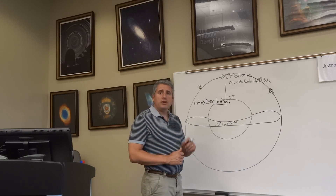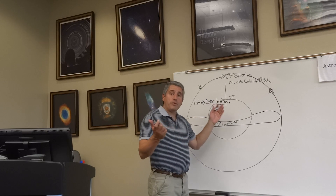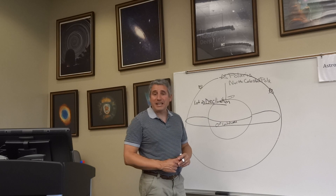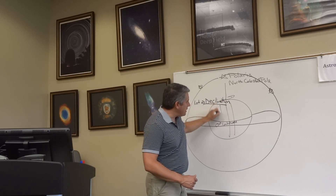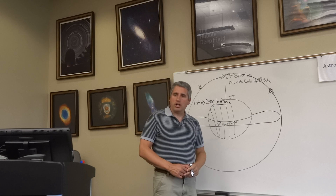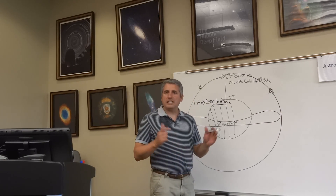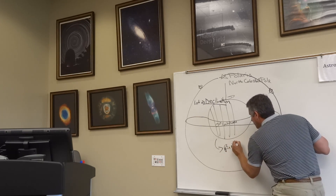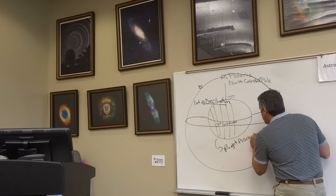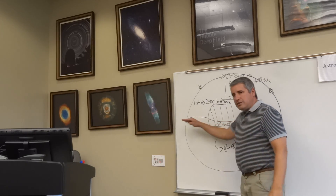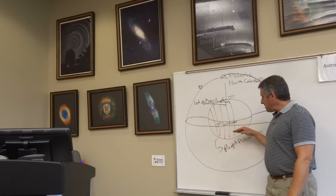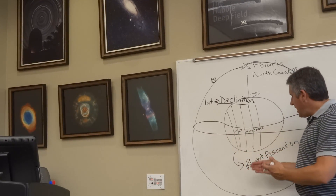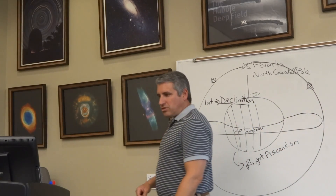Just like we would on Earth, we need a north-south line to pin down a location — what we call 'x marks the spot.' On Earth, we call those lines of longitude. In space, those lines of longitude represent something called right ascension. So in order to locate something on the surface of the Earth, you would quote its latitude and longitude. In space, you would work from declination — celestial latitude — and right ascension, which is essentially celestial longitude.